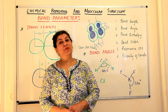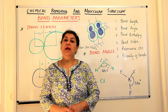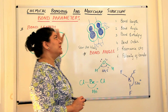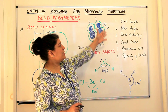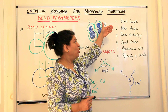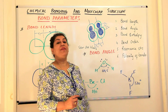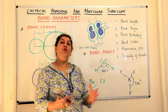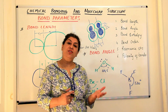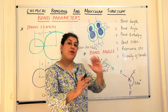Hello, I'm Seema and welcome to part 6 of the chapter chemical bonding and molecular structure. Before we come to the various theories of chemical bonding, we should be aware of certain bond parameters. There are six bond parameters: bond length, bond angle, bond enthalpy, bond order, resonance structures, and polarity of bonds. These come before the VSEPR theory, valence bond theory, and molecular orbital theory. Let us deal with these bond parameters first one by one.